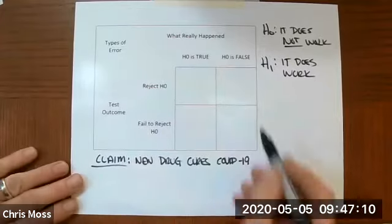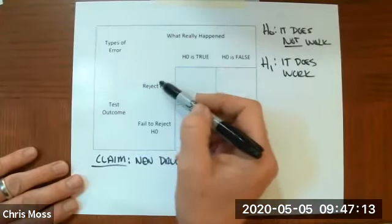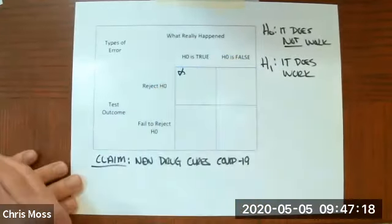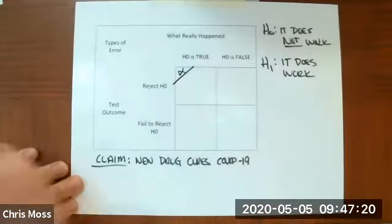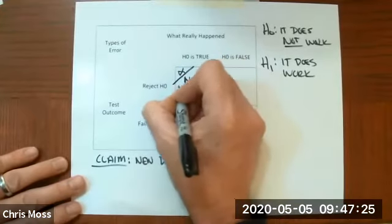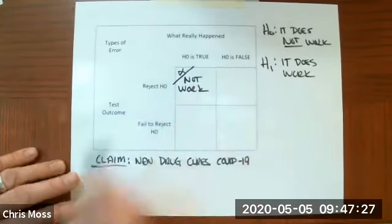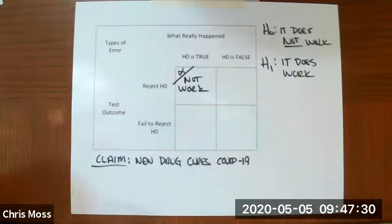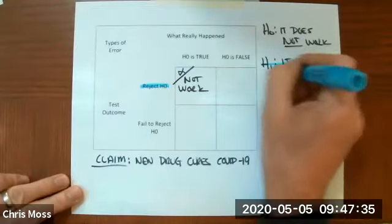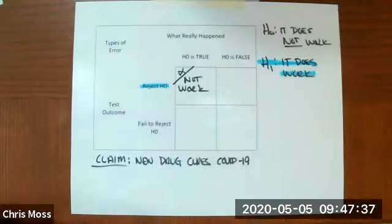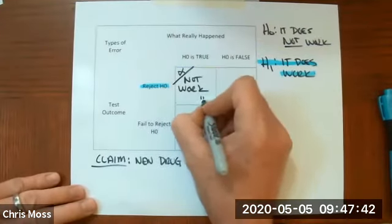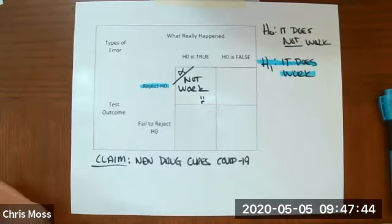Let's explore the type of error we might encounter. First off, if H0 is true and we choose to reject H0, this is the type 1 error that is set by alpha. What is the outcome here? It does not work, but we have rejected that and we believe that it does work. So, an error has been made. An ineffective drug has been introduced.